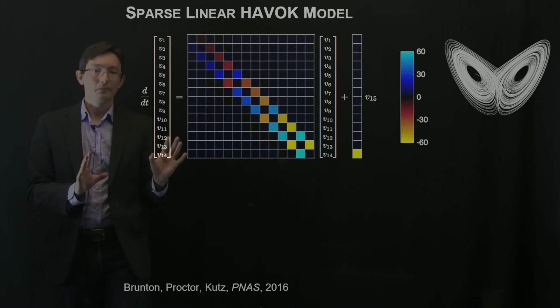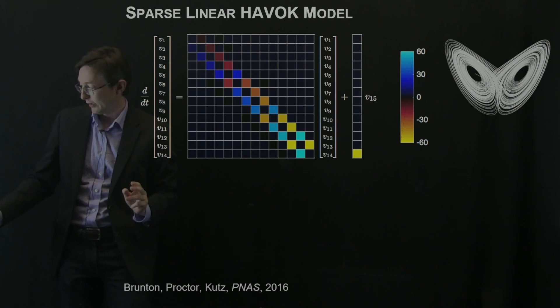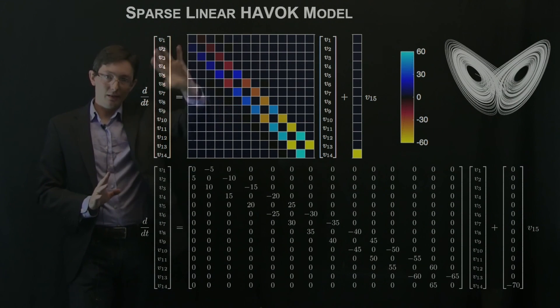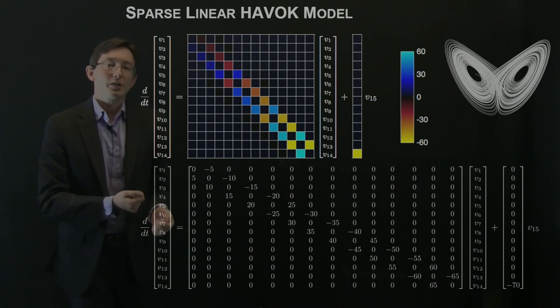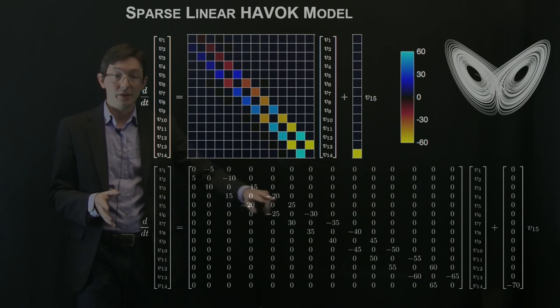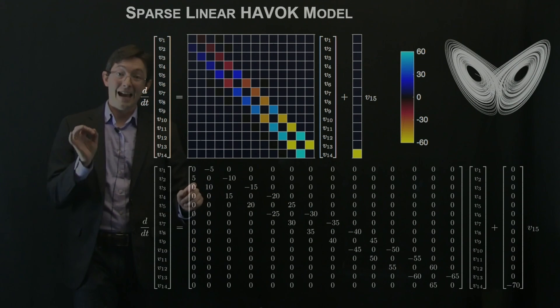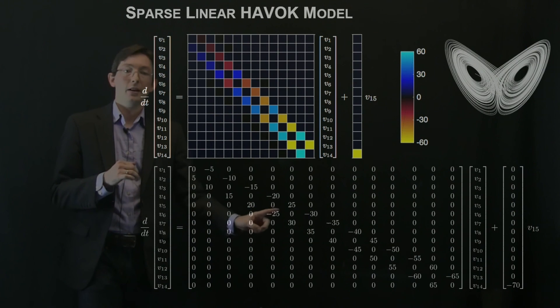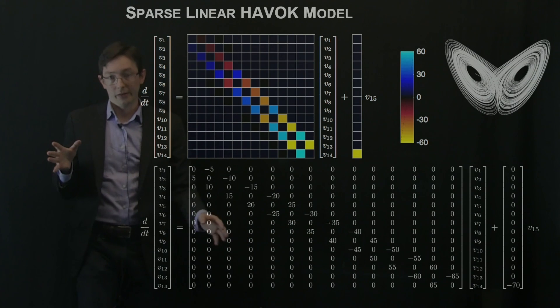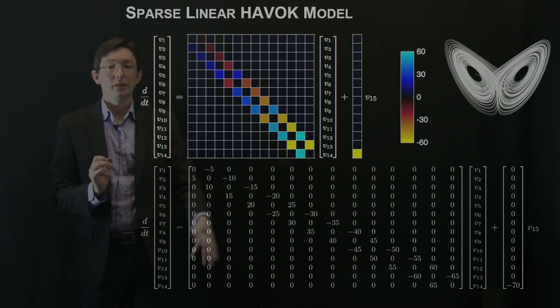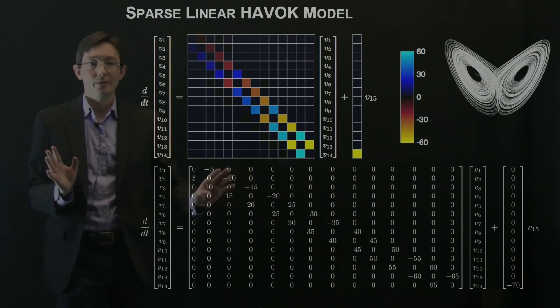This got us thinking, why don't we try to take this Lorenz HAVOK model and actually cook up our own model? This is a model I built in MATLAB where I've manually enforced this symmetry and I've also enforced that these are exact integer multiples of 5. So the coefficients are 5, 10, 15, 20, minus 25, 30, 35, 40, minus 45, and so on and so forth. This is a model that is inspired by the Lorenz HAVOK model, but I just cooked this up from scratch, just as a state space system in MATLAB.